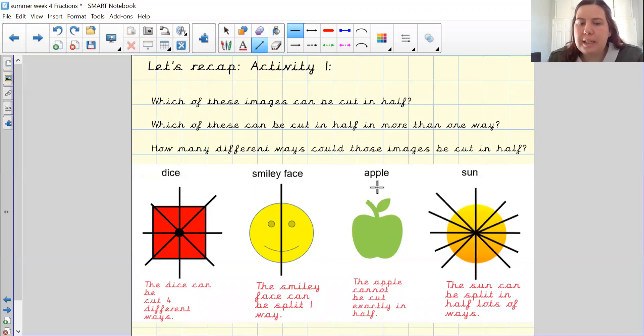The apple cannot be cut exactly because if I cut it down that way, I have a leaf on one side and not on the other. If I was to do it vertically, I have a different top half to a bottom part. The sun is a circle, which means it can be cut in a range of different ways as you can see. So well done if you have got most of them correctly at home.